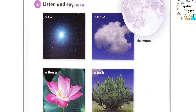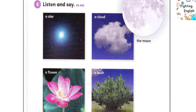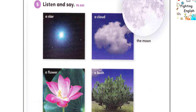Activity 5: Listen and say. A star, a flower, a cloud.